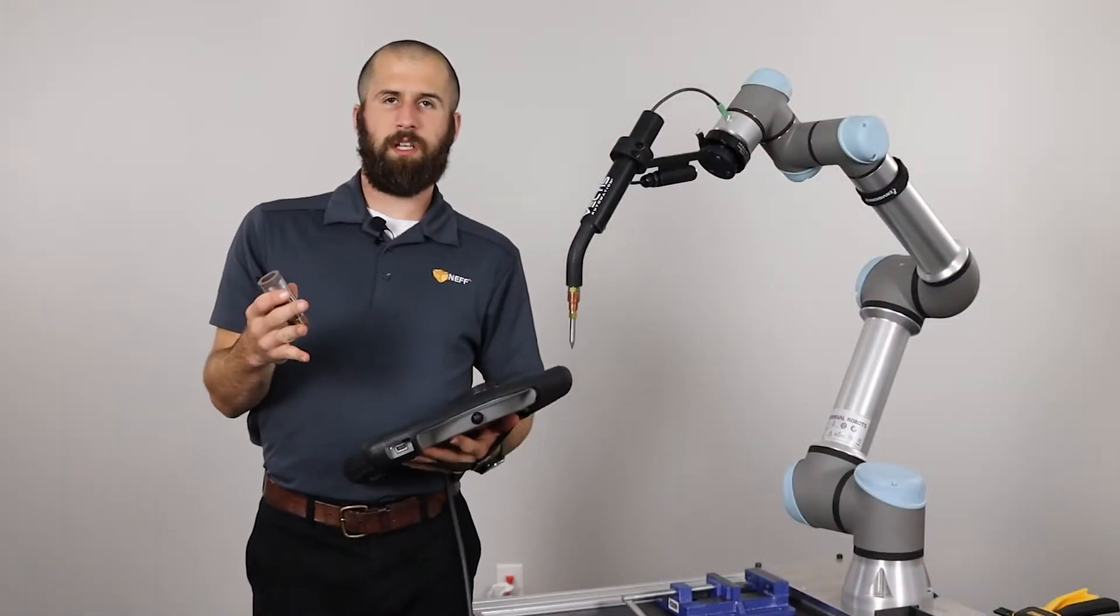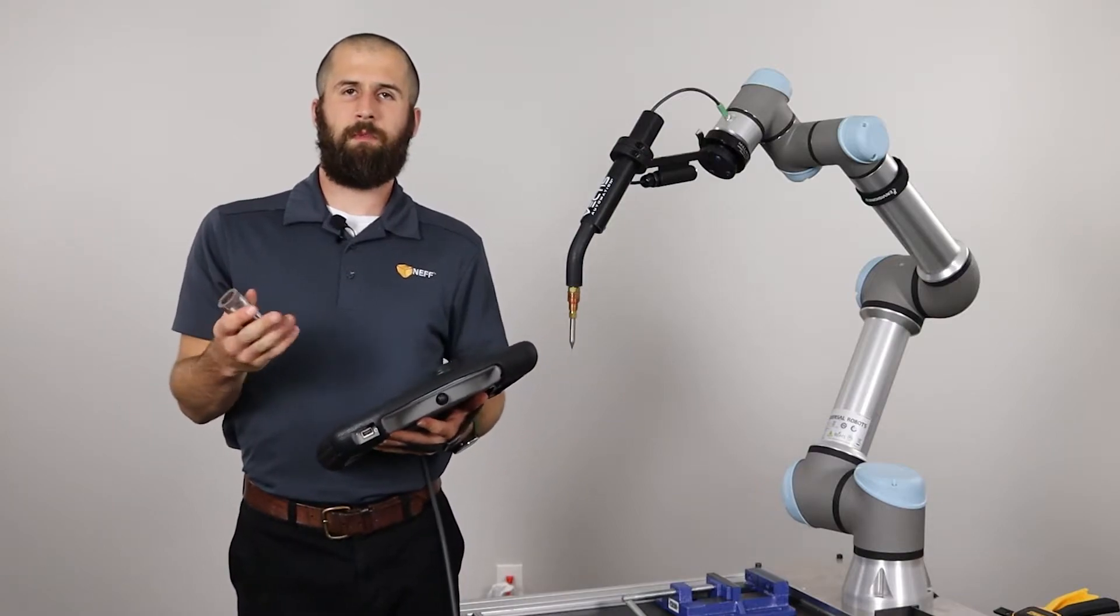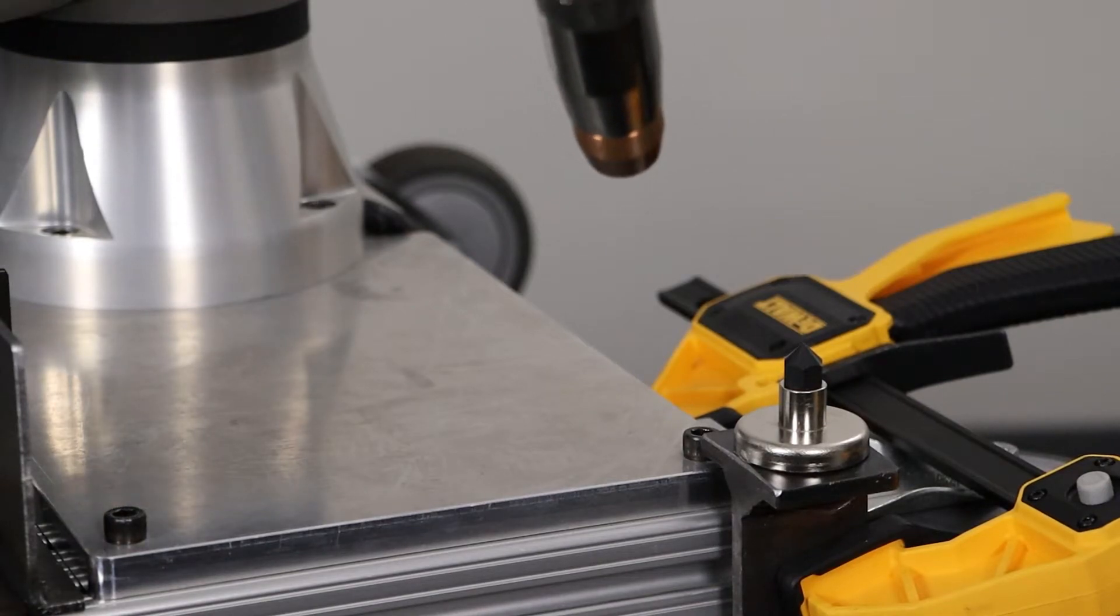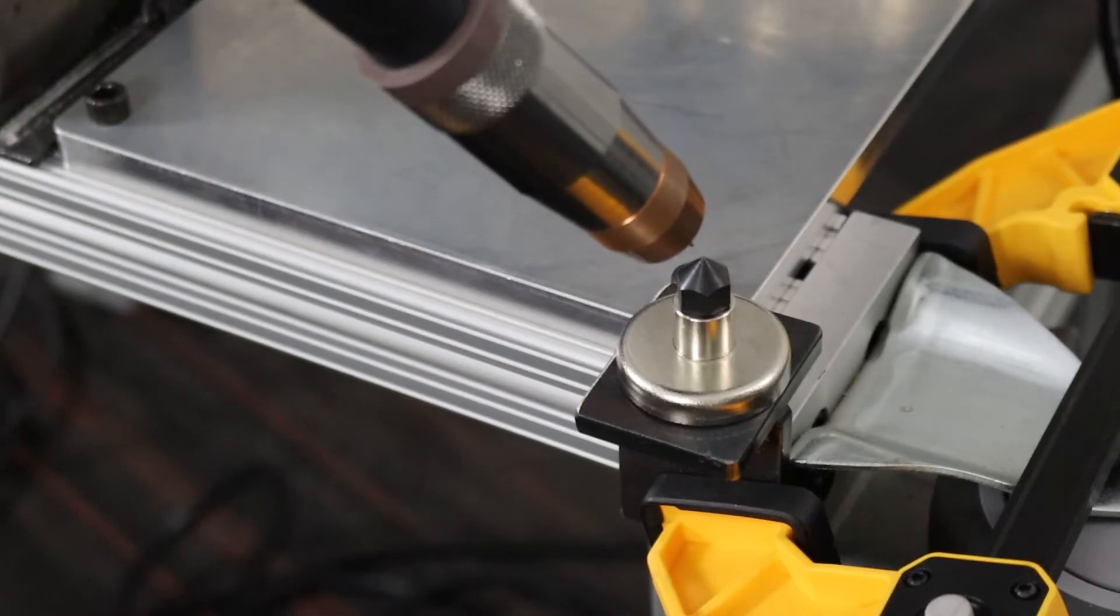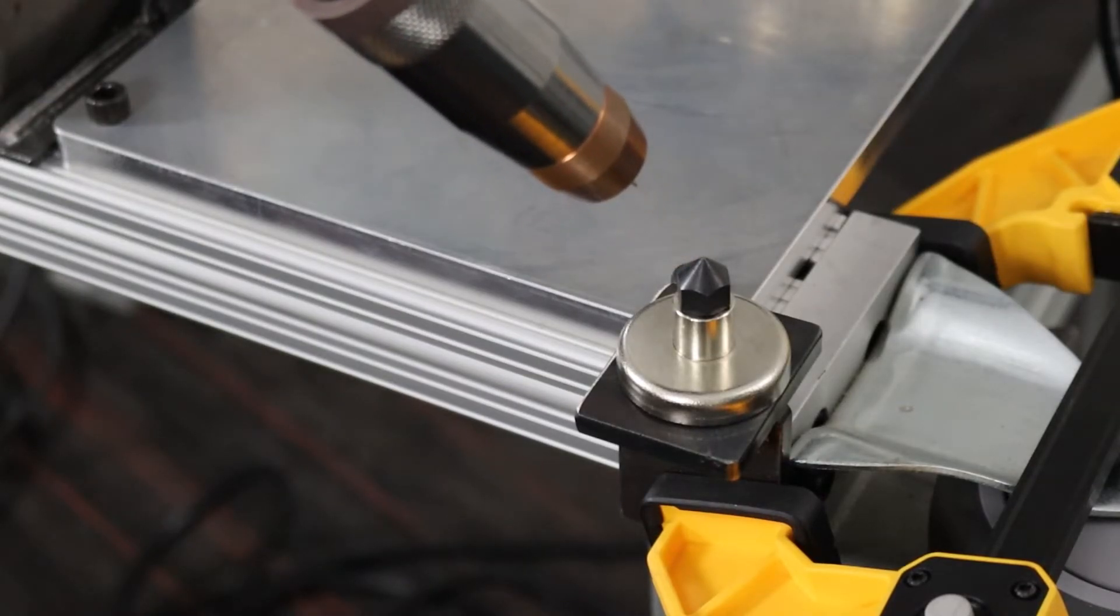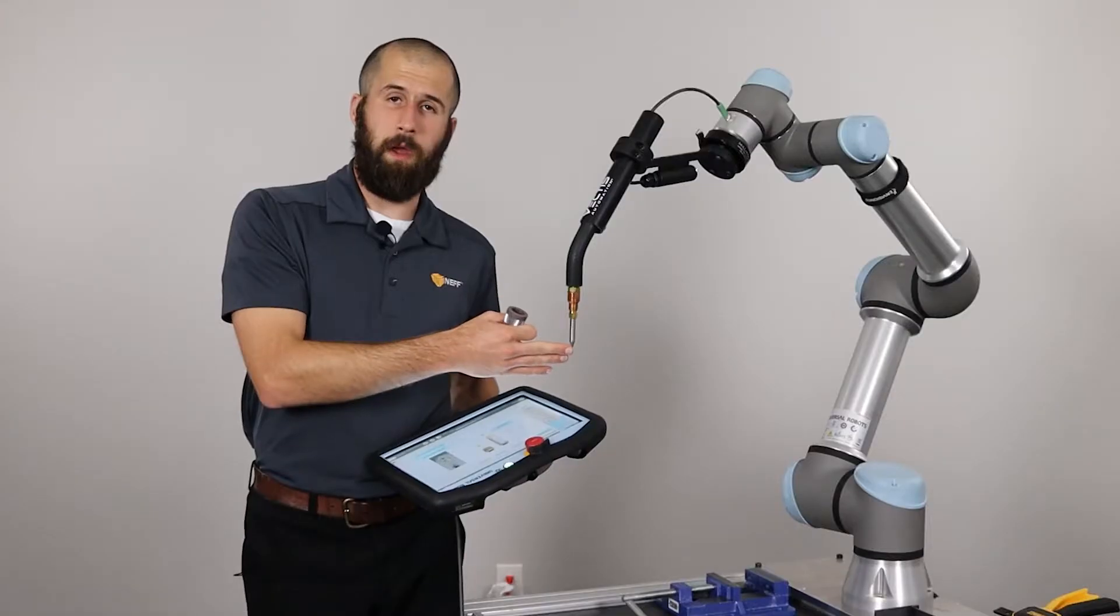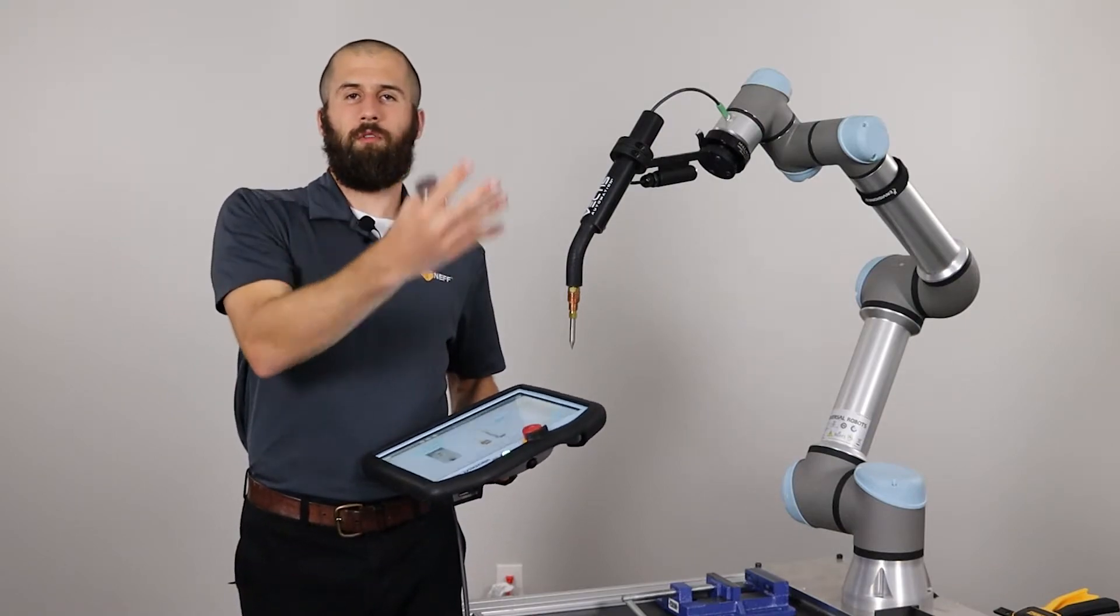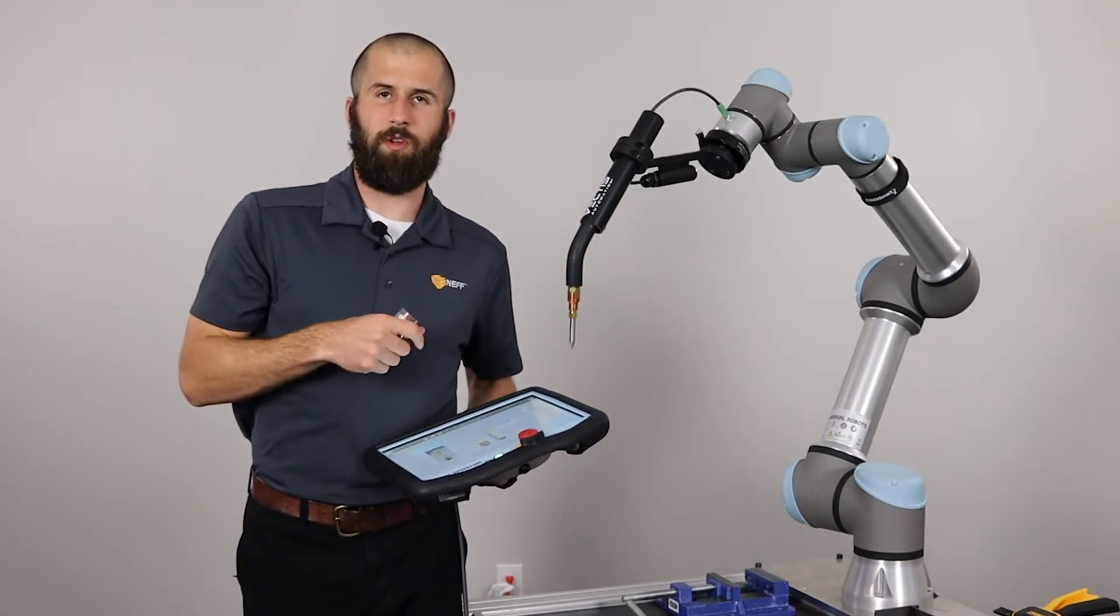A couple things to consider when setting up your Vectis system are going to be two configurations. One is going to be the TCP or the tool center point of the robot. In order to configure this you'll need to know where the weld wire is and then you'll go by the end of the barrel of the weld gun. Those two TCPs are going to form the overarching TCP that is used during the weld.